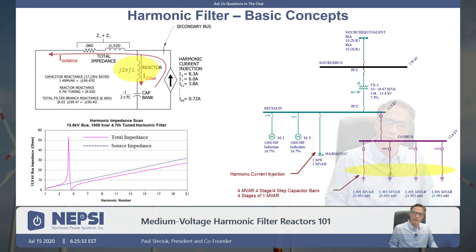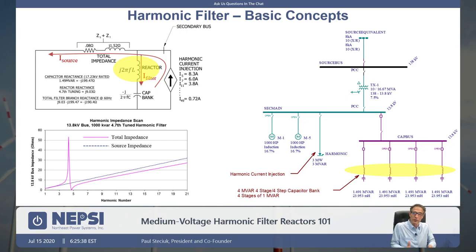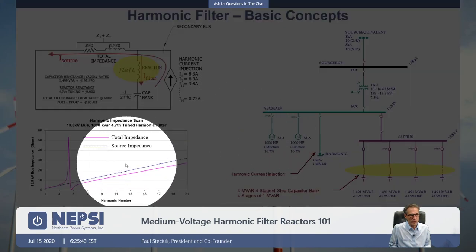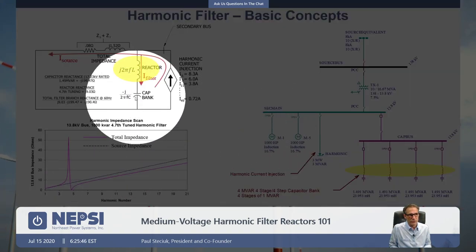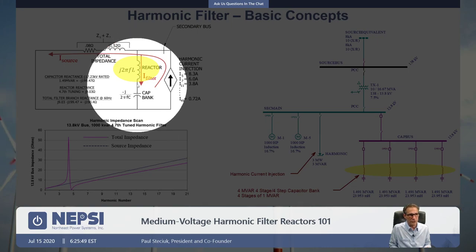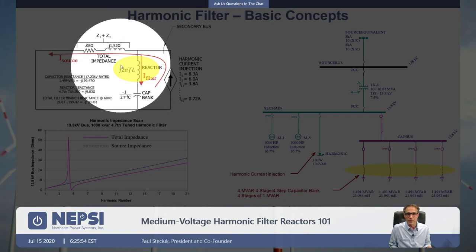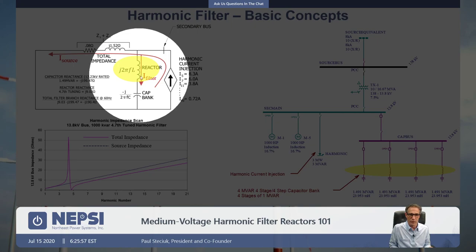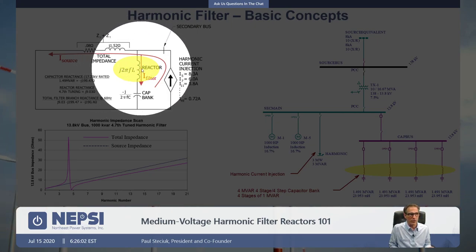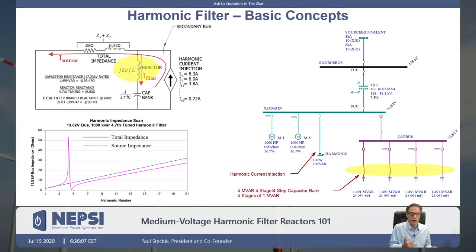Let's do some harmonic filter basics first and talk about what a harmonic filter is. A harmonic filter consists of a capacitor and a reactor — the most basic notched harmonic filter system — but there's also sometimes a high-pass resistor. So we have resistor, capacitor, reactor. Today we're talking about what's shaded in yellow: the actual reactor. In some cases this might be iron core or air core. Iron core is used in metal closed systems; air core is used in open air systems.